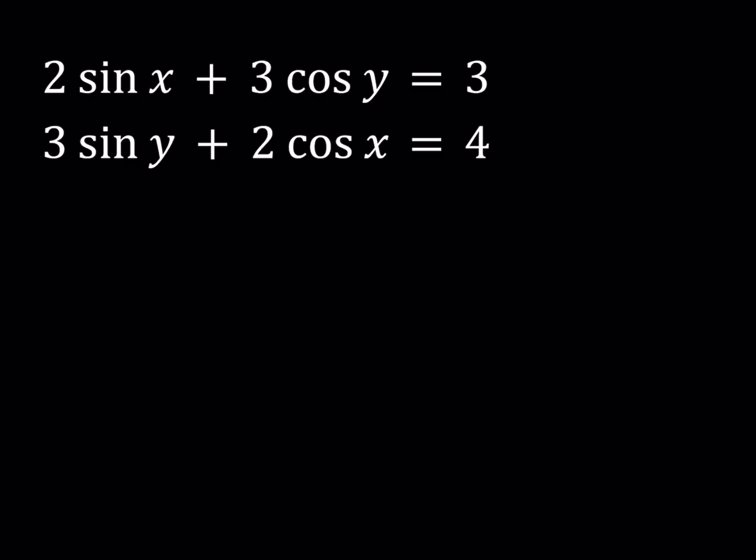We have 2 sine x plus 3 cosine y equals 3, and 3 sine y plus 2 cosine x equals 4. We're going to be looking for x and y values.